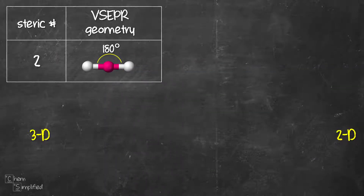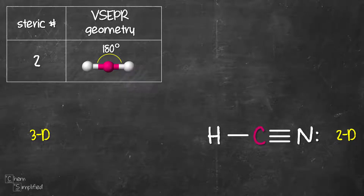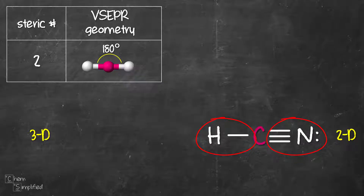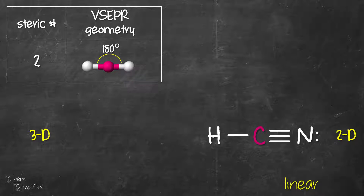Starting with steric number 2 — that means our central atom is connected to two groups. We have HCN as our example. Carbon is our central atom and it's connected to two groups: a single bond to H and a triple bond to N. That's steric number 2. The two groups will arrange themselves as far apart from each other, which is 180 degrees in a linear shape. Therefore, the 3D structure will look exactly like the 2D Lewis structure.